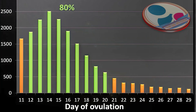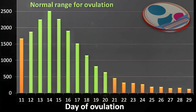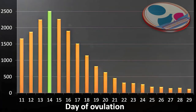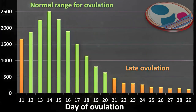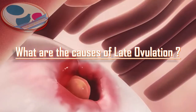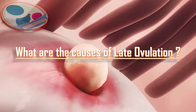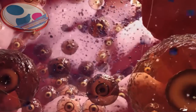We can call this the normal range of ovulation. If someone doesn't ovulate until day 21, this is called late ovulation. So what are the causes of late ovulation? It tends to be the same factors that cause people not to ovulate at all.